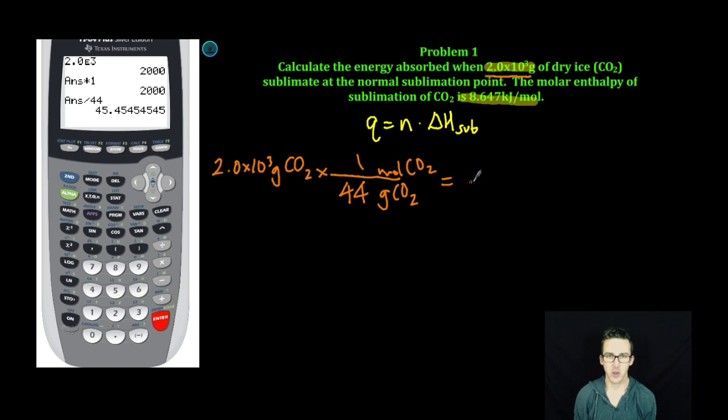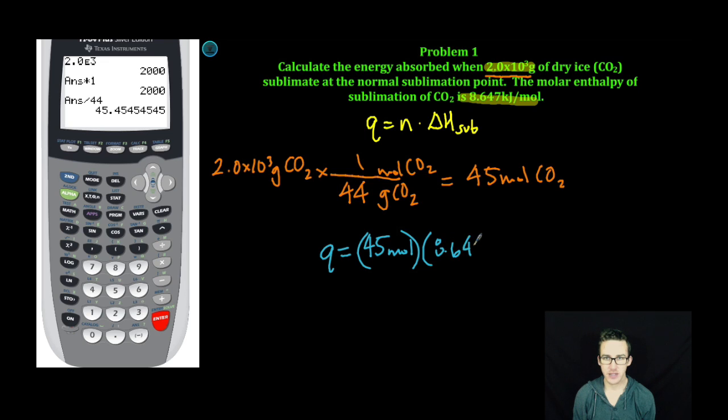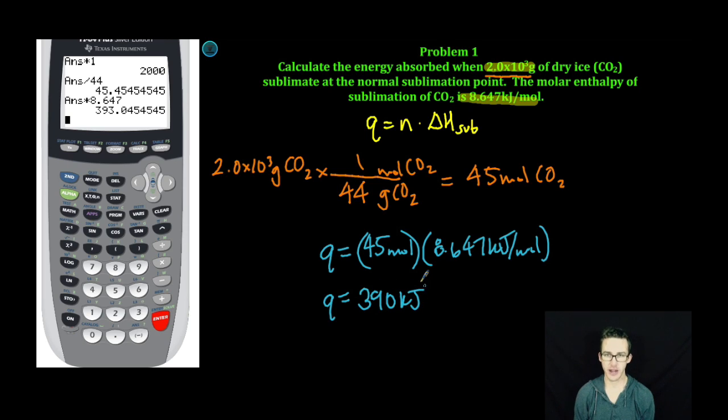We've got 45 moles of CO2. We simply take that and plug it into our equation: 45 moles times 8.647 kilojoules per mole. The heat absorbed to get this 45 moles of CO2 to sublime, to the correct number of significant figures, is 390 kilojoules. Boom. Done.